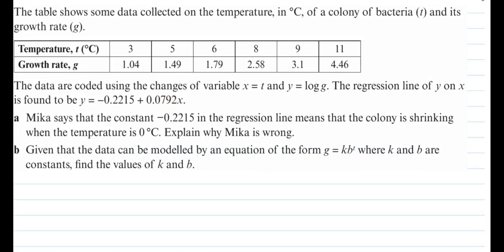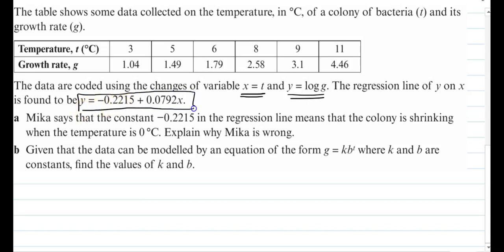This is our question. The table shows data collected on the temperature in degrees centigrade of a colony of bacteria T and its growth rate G. The data are coded using the change of variable x = T and y = log G. The regression line y on x is given as y = −0.2215 + 0.0792x. Mika says that the constant −0.2215 means the colony is shrinking. Let's see whether Mika is right or wrong.